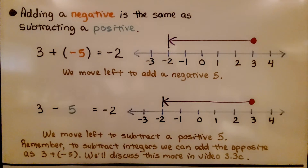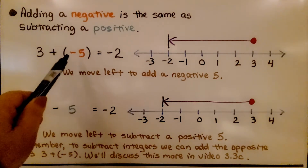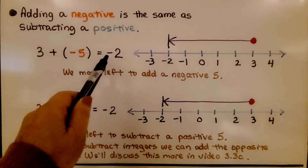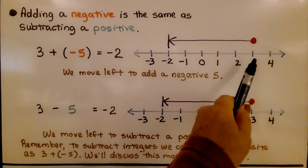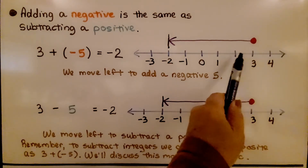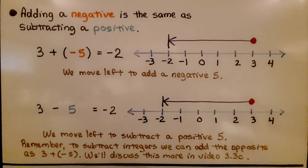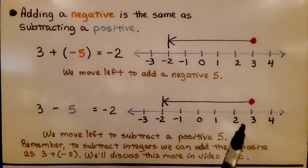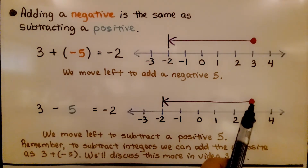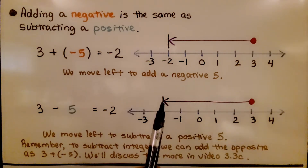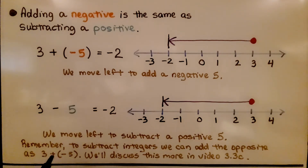Adding a negative is the same as subtracting a positive. If we have 3 plus a negative 5, it's going to equal negative 2. We start at positive 3, move to the left to add the negative 5, and land at negative 2. Similarly, if we have positive 3 subtracting positive 5, we move from 3 left five units. So to subtract integers, we can add the opposite — 3 plus a negative 5.